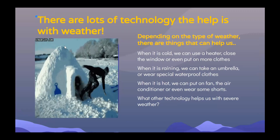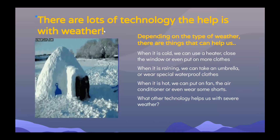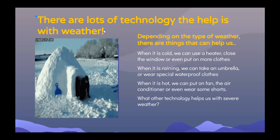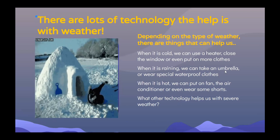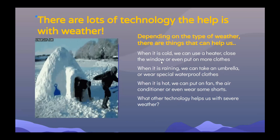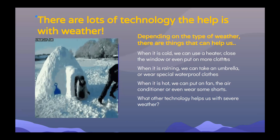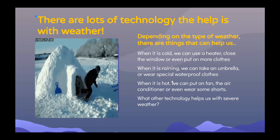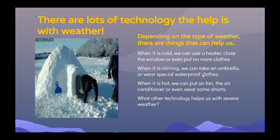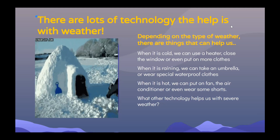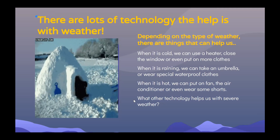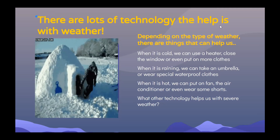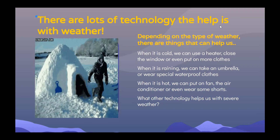Lots of technology helps us with weather. When it's cold, we can use a heater, close a window, or put on more clothes. When it's raining, we take an umbrella or wear special clothes to stay dry. When it's hot, we can use a fan, air conditioner, or wear shorts. What other technology helps us with severe weather?